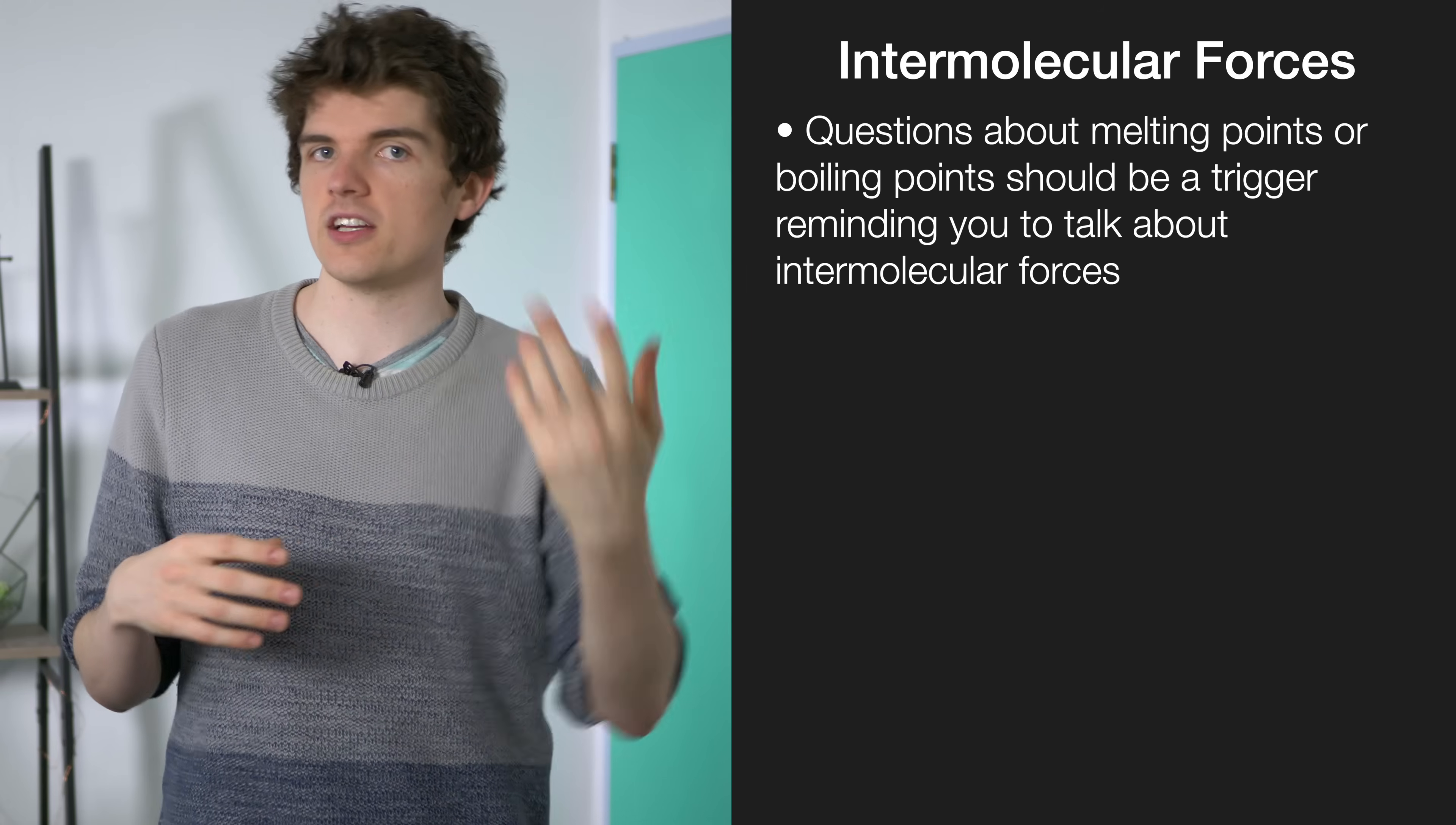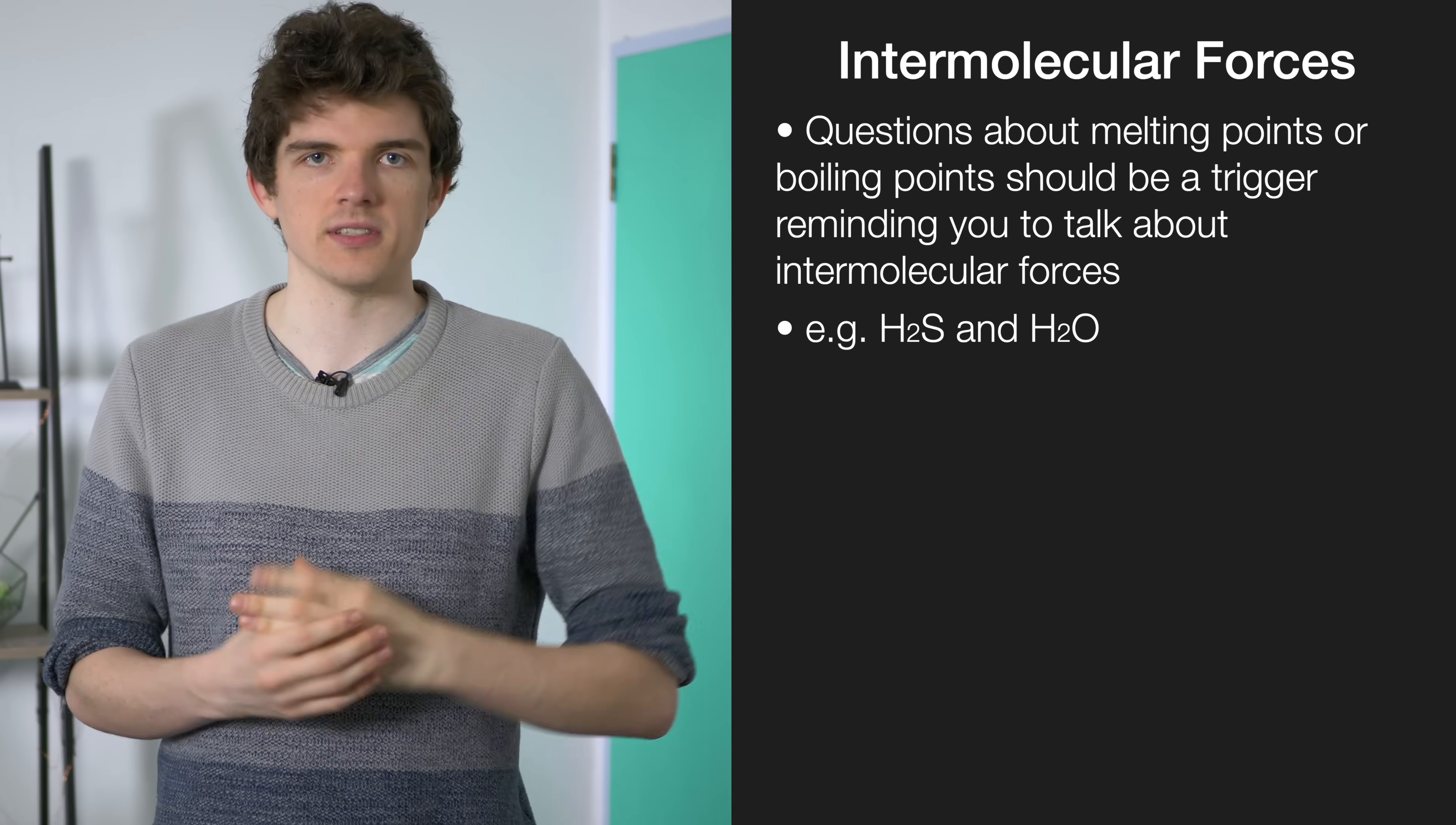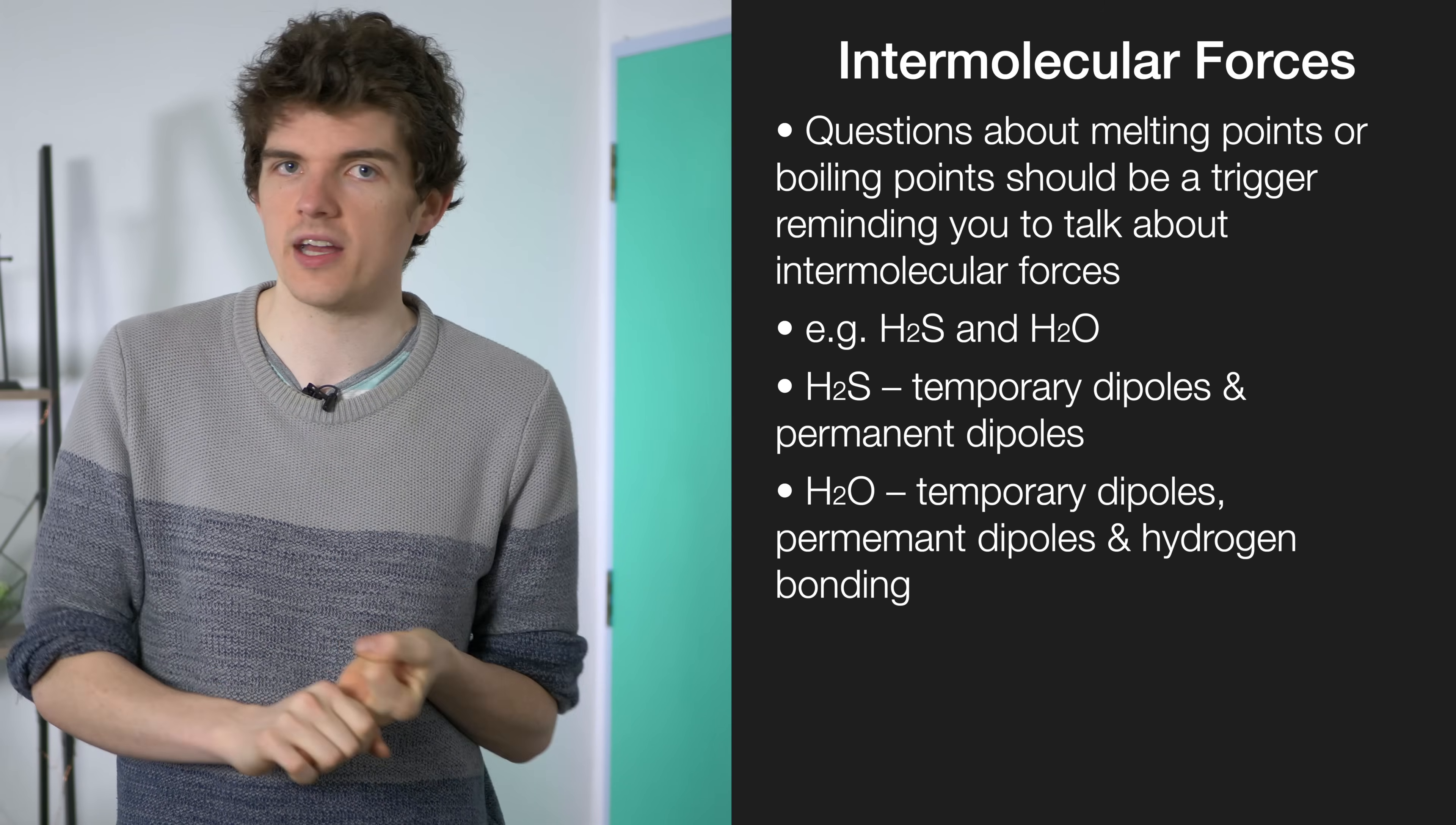So let's take for example H2O and H2S. The first thing to start would be to write out or list out all of the intermolecular forces that each of those substances have. So for example, H2S has temporary dipoles and permanent dipoles because it's a polar molecule. H2O has temporary dipoles, permanent dipoles and also has hydrogen bonding.